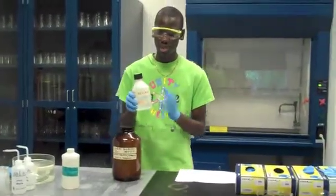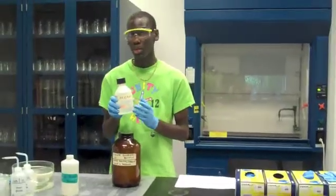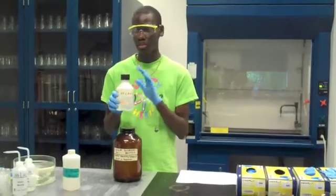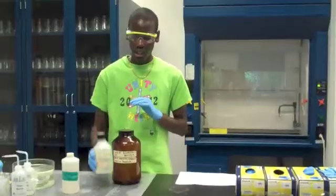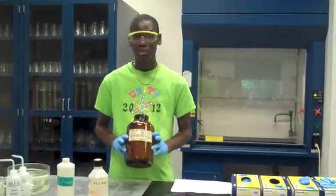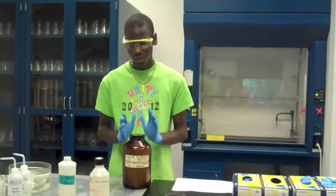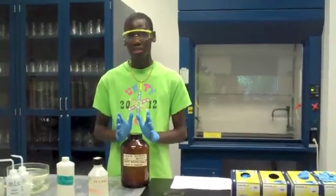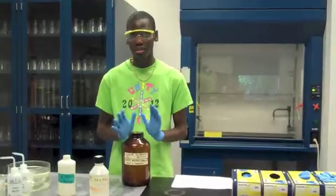We have the hexane solution. This will be used to measure the volume of one drop, which you will do at the end of your testing. And then lastly, we have this brown jar in front of me. This is labeled chemical disposal. This is where you put all waste materials, never dump in the sink. This is where everything goes.